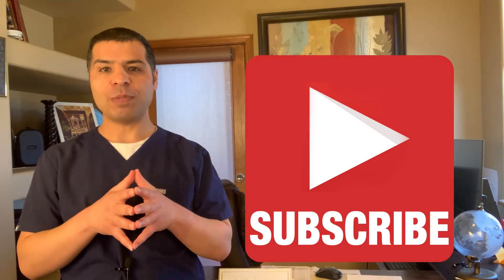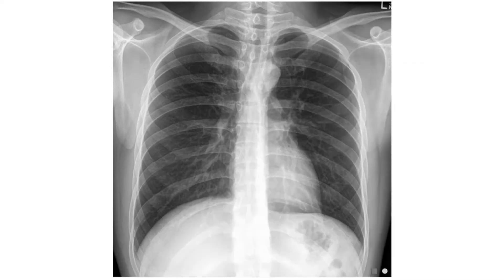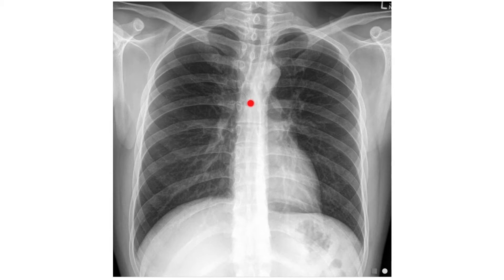The depth of ET tube is always related to the carina. The very first step in determining the right depth of the ET tube is trying to identify the carina — where the right main stem and the left main stem bronchi meet. Sometimes it's very easy, like in this x-ray where there's no ET tube. We can see the left main stem right here, so we can guess the carina will be right here.